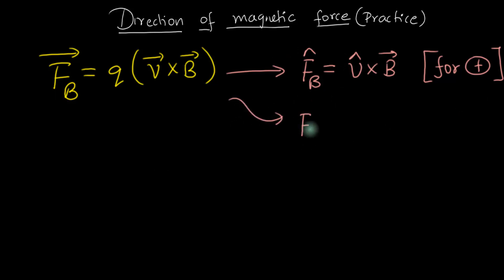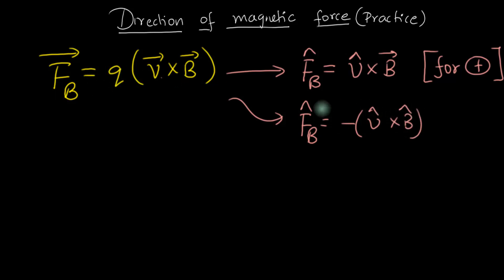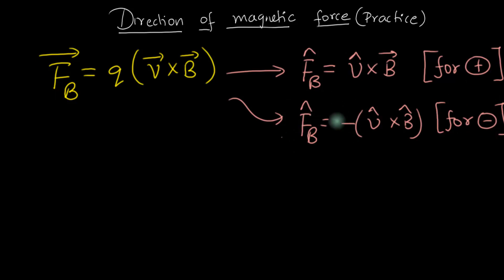If you're dealing with negative charges, all you need to do is flip the sign of v cross B, because there will be a negative sign. In other words, calculate what happens for a positive charge, and if it was a negative charge, put a negative sign, meaning the direction of the force just flips over. So this episode is more about understanding how to deal with the vector product and how to get the direction of the vector product.